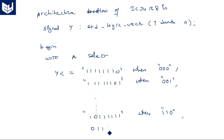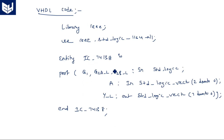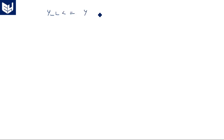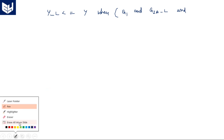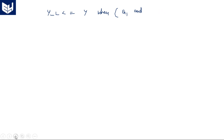Continuing the with-select statement: for the seventh input ("111"), the output is "01111111". You should also write 'when others'. So when others, the output is "11111111" (all ones — no output active). The conditional statements are then completed. Now, Y_L should be assigned with Y when the enable pin set is 1,0,0 — meaning: Y_L <= Y when G1 and (not G2A) and (not G2B) — because G2A and G2B are active low pins — else all ones ("11111111").